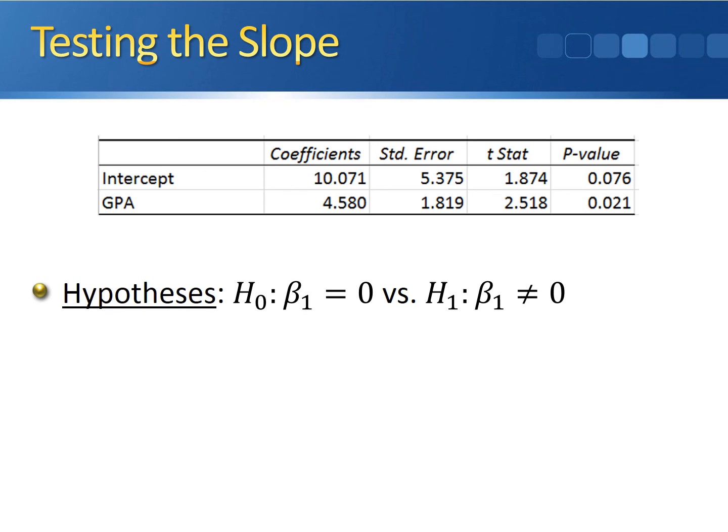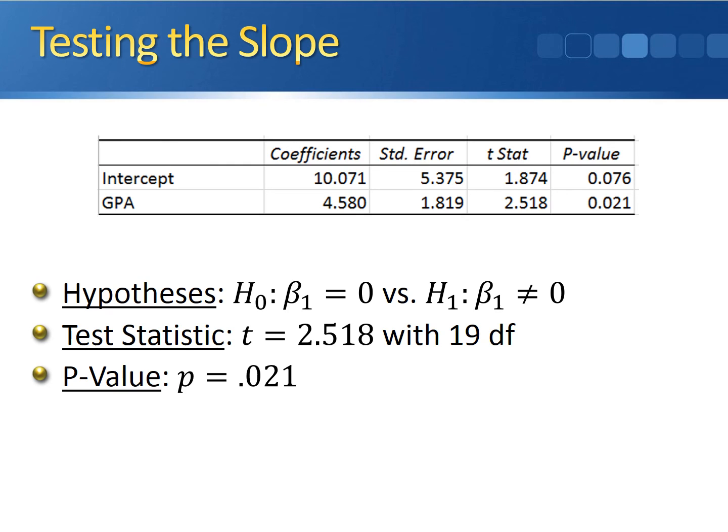For the hypothesis, we're going to start out with beta 1 equal to zero versus beta 1 not equal to zero. Our test statistic comes directly from the output, 2.518, and it has 19 degrees of freedom. We had 21 observations altogether, n minus 2 gives us our 19 degrees of freedom. The p-value of this test is 0.021.